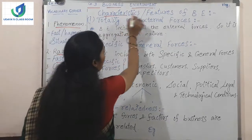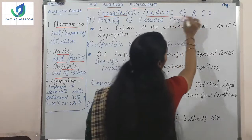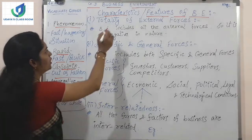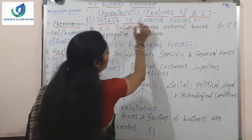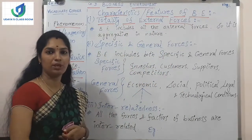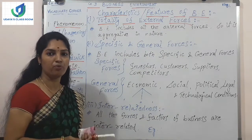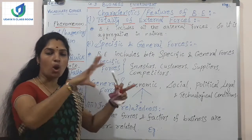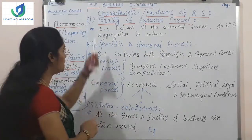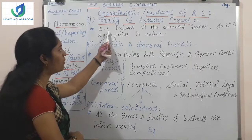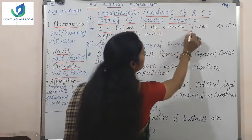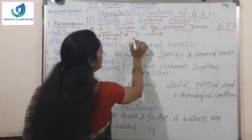The characteristics or features of business environment — the first point is totality of external forces. In the previous video, I explained about the specific forces and general forces which surround the organization. Business environment includes all the external forces, so it is aggregative in nature.